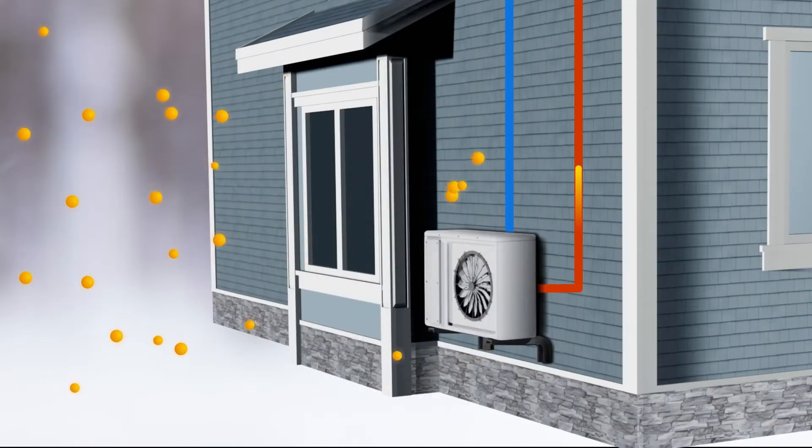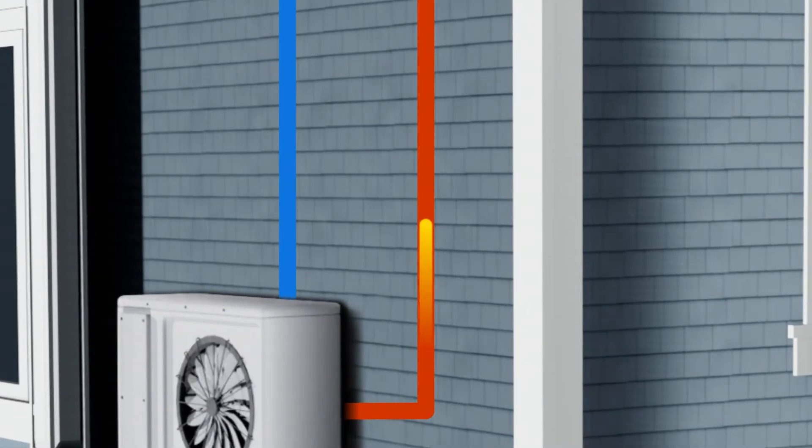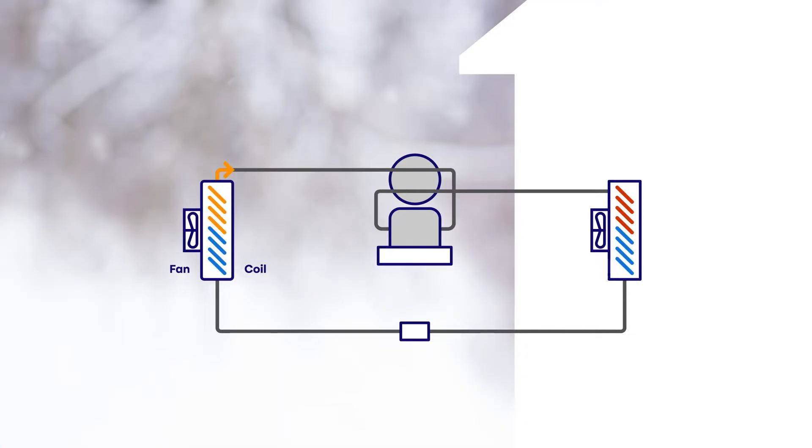The energy is collected by the outdoor unit, which transfers it to the fluid circulating in the heat pump loop. This liquid is referred to as the refrigerant. It can circulate as a liquid or a gas.